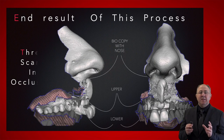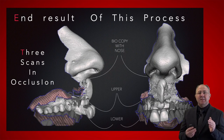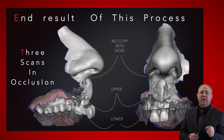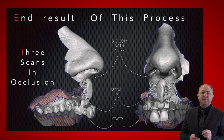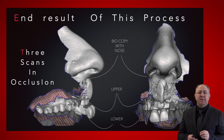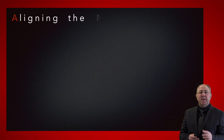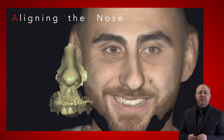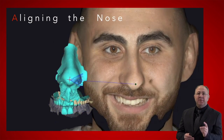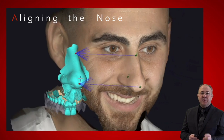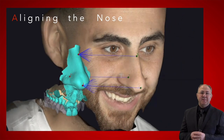After this process is complete, we have three scans aligned together: an upper scan, lower scan, and a biocopy scan with the nose. The next step is easy — only one facial scan is needed with a big smile, and we match the nose from the facial scan to the nose from the intraoral scan. The process is complete.